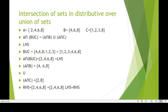For distributive intersection over union: set A = {2, 4, 6, 8}, set B = {4, 6, 8}, set C = {1, 2, 3, 8}. Rule: A intersection (B union C) equals (A intersection B) union (A intersection C). B union C = {1, 2, 3, 4, 6, 8}. A intersection (B union C) = {2, 4, 6, 8} — the left-hand side. A intersection B = {4, 6, 8}; A intersection C = {2, 8}. (A intersection B) union (A intersection C) = {2, 4, 6, 8} — the right-hand side. LHS equals RHS.